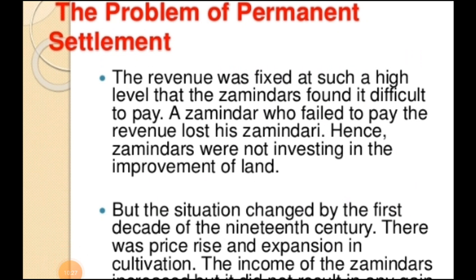The Problem of Permanent Settlement: The revenue was fixed at such a high level that Zamindars found it difficult to pay. The permanent revenue was fixed, but it was fixed very highly — the amount was very high, making it difficult for Zamindars to pay. The Zamindars who failed to pay the revenue lost their Zamindari. Hence, Zamindars were not investing in the improvement of the land.